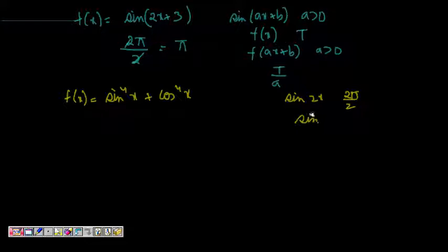Okay, so sine x we can easily find. So let us try to put it in some sine of some multiples of x. So this is sine squared x plus cos squared x, whole square minus 2 sine squared x cos squared x.